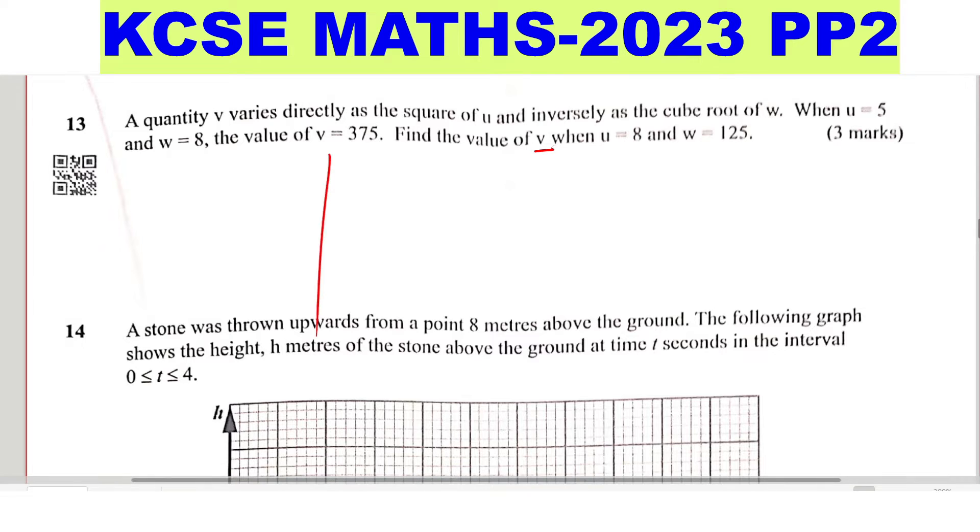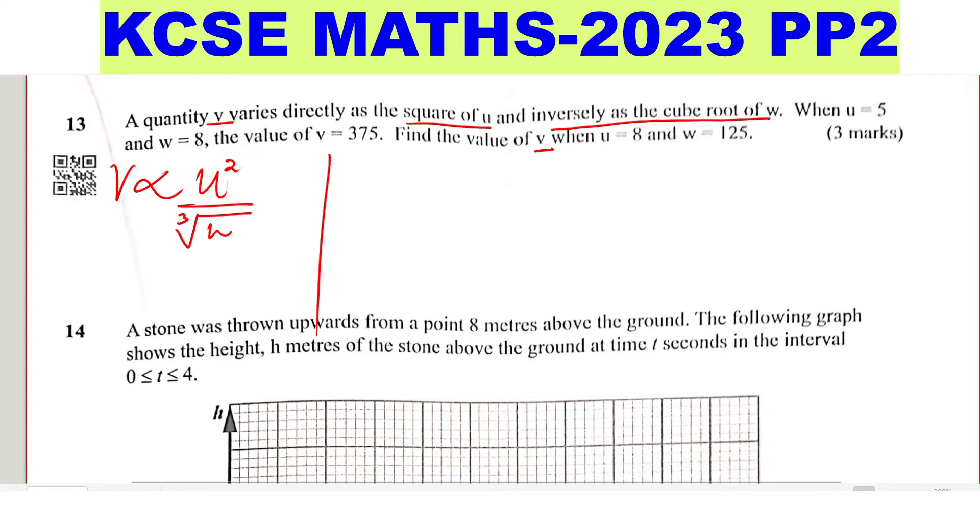So the first thing you're going to do is writing this variation. Quantity V varies directly, the sign of proportionality, as the square of U and inversely as the cube root of W.